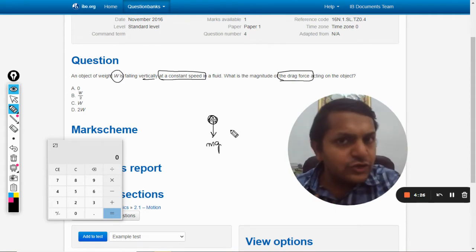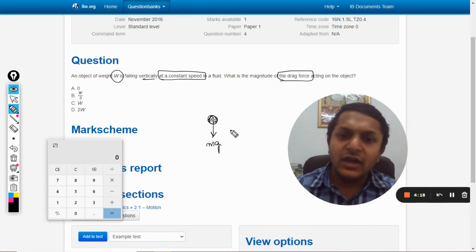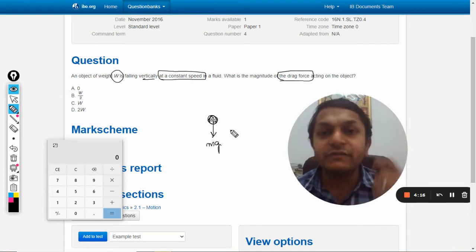So according to Newton, if a force is acting on a body, it will definitely have acceleration. The momentum will increase, the velocity will increase. Now the problem is it's saying that it is moving with a constant speed, so it means the velocity is not increasing.